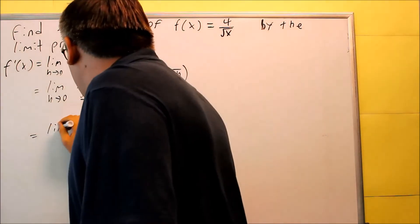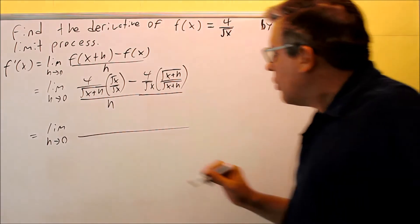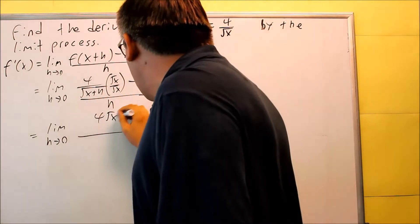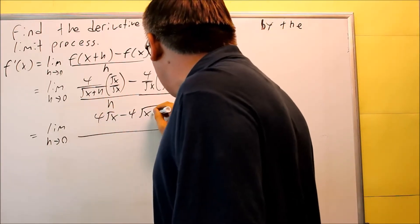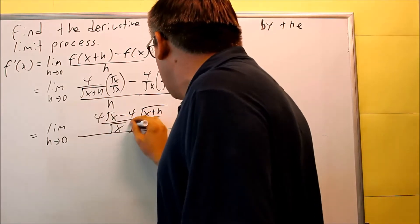Next step, we're going to rewrite this as a single denominator. Four square root of x minus four square root of x+h here. All this on the bottom is our common denominator.